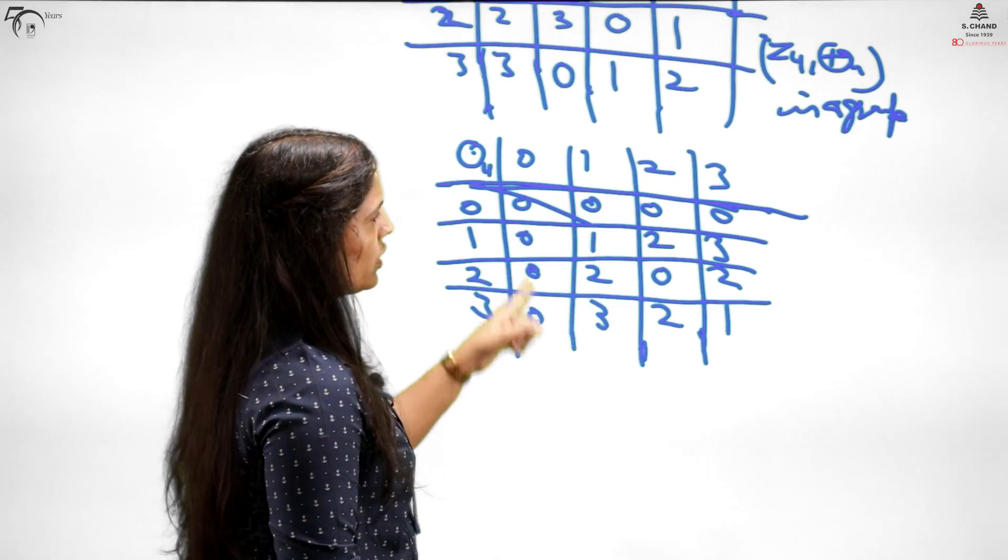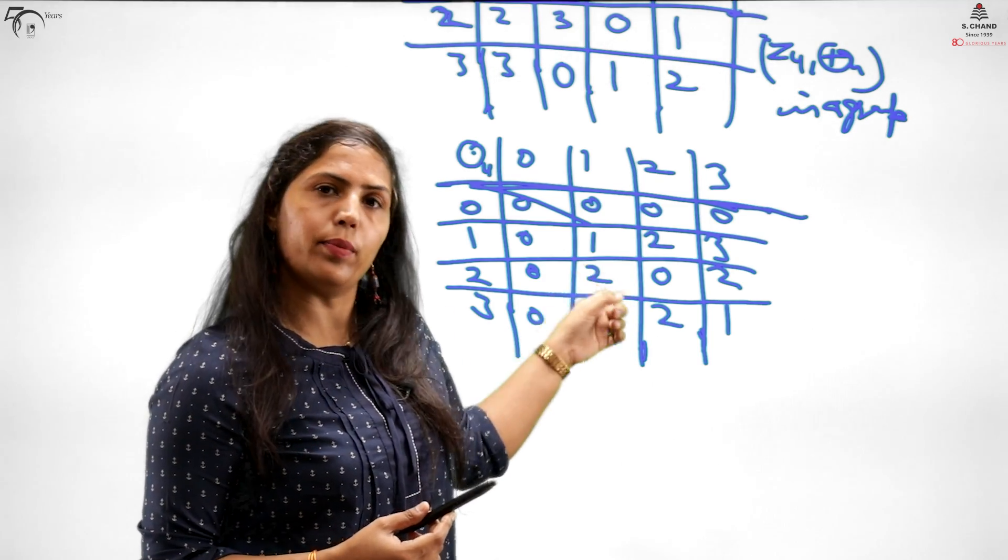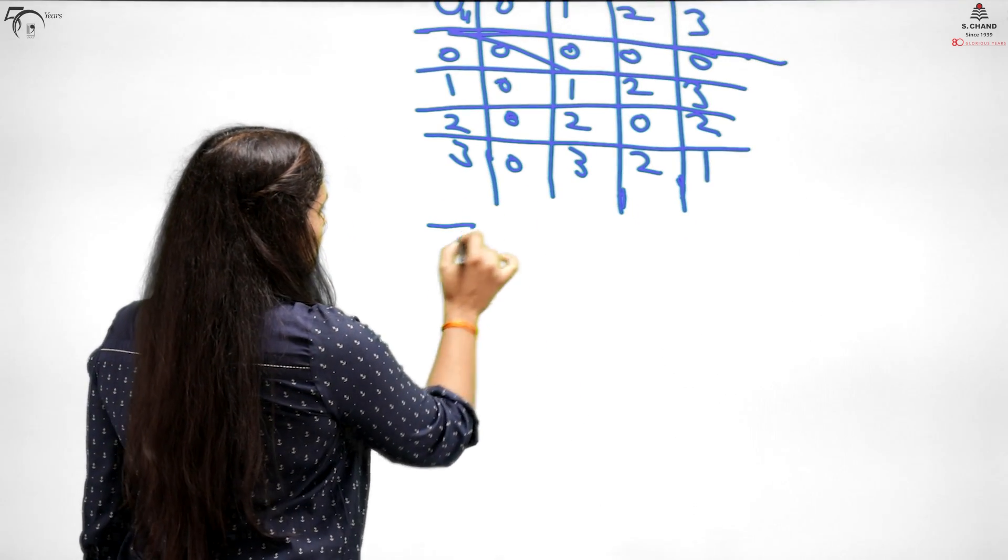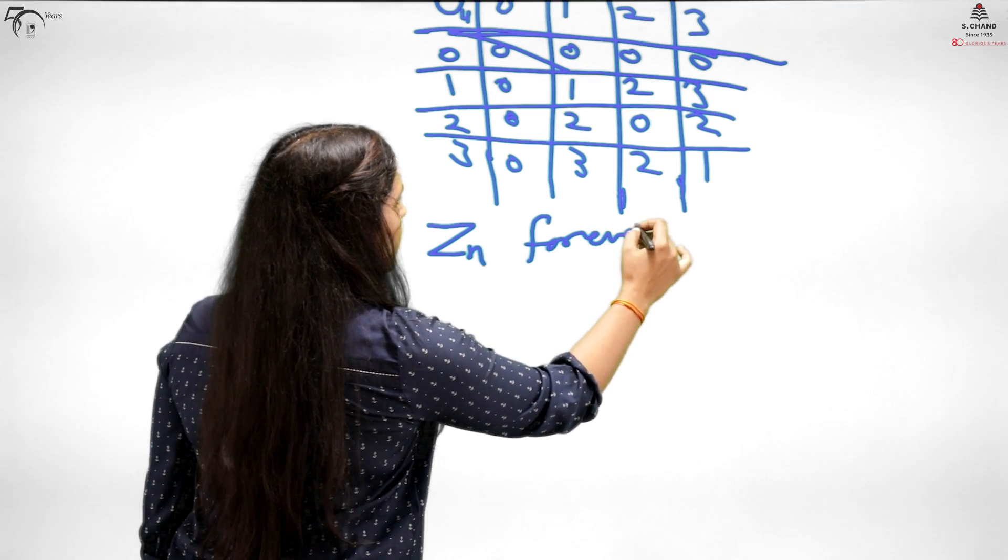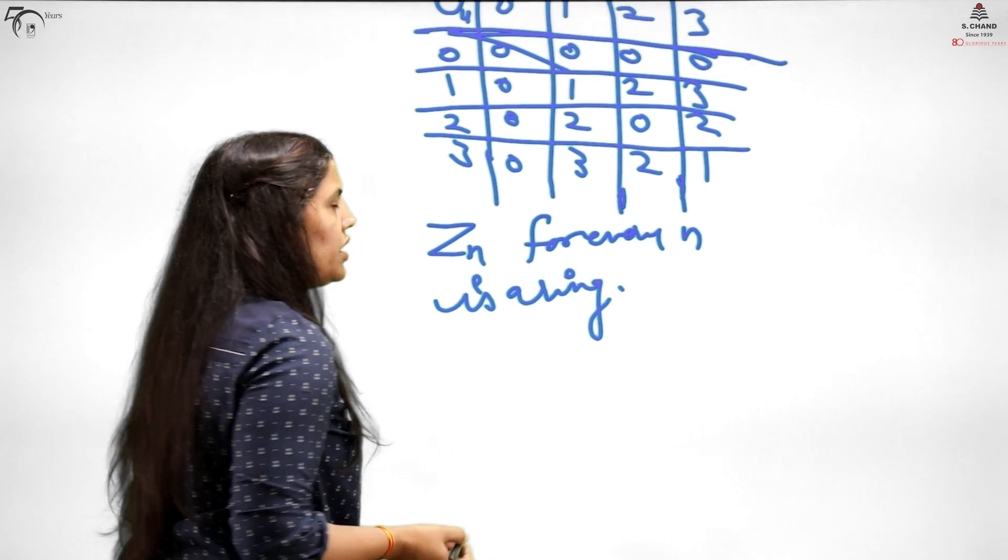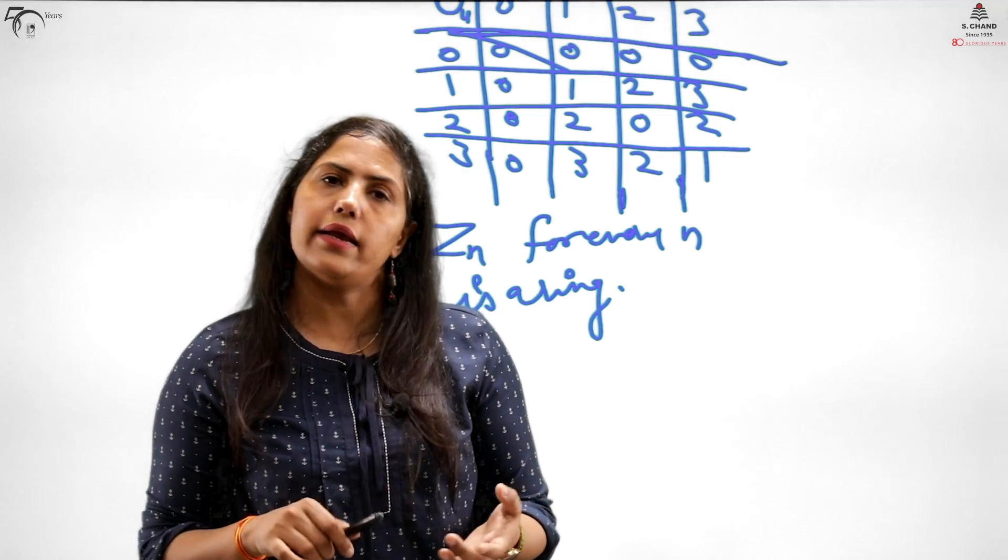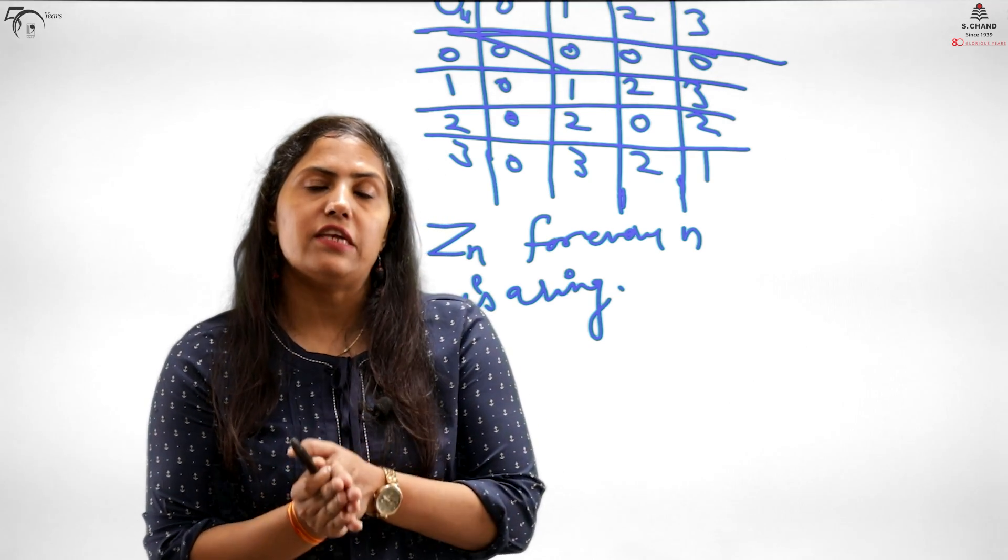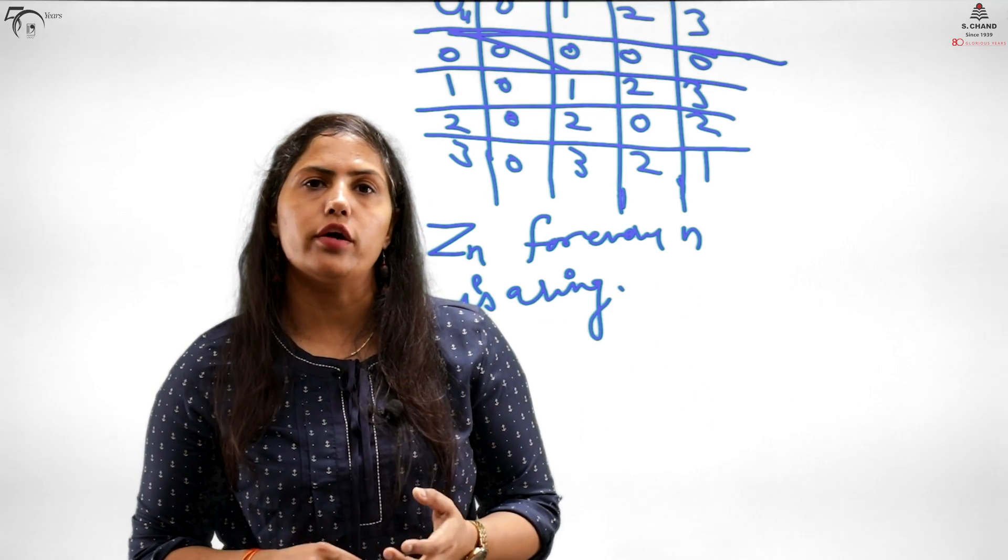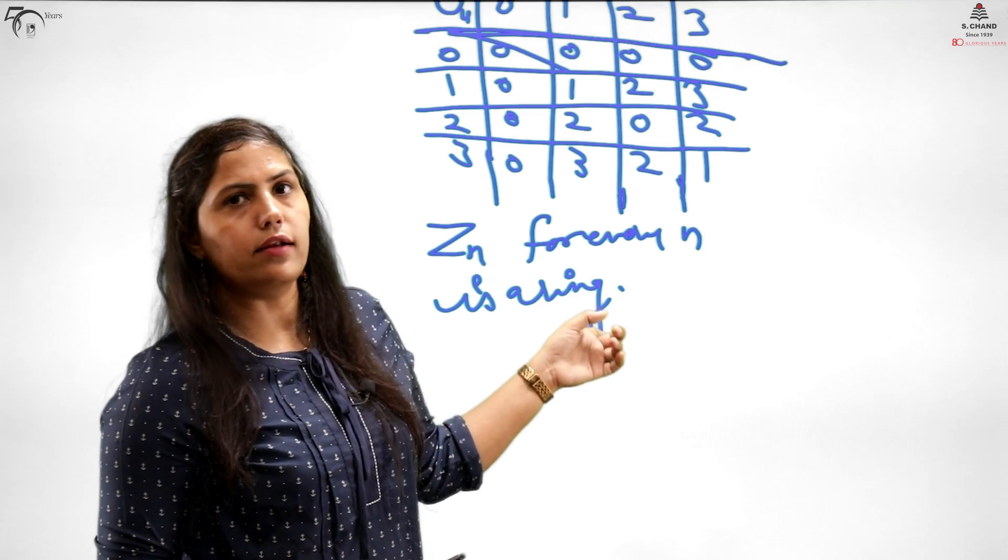And these elements are also appearing every time. When you did group theory, this particular set was not forming a group. But when you connect to rings, I had generalized that Z_n for every n is a ring. All Z_n's are rings. You can take any Z_n as an example of a ring - Z7, Z8. But in group theory, I stated that when n is prime, then with respect to dot it is a group. Otherwise not. But in rings, you see, overall for any n it is a ring.